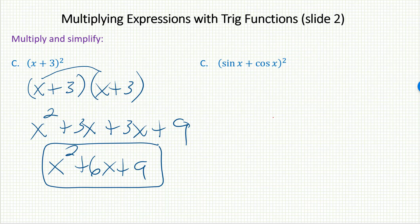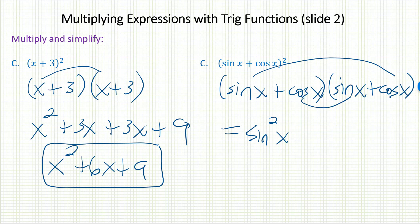Instead, you have to recognize this is a situation like we had before, where you're going to have to multiply that item by itself. That will result in a foil problem. First would be sine x times sine x, sine squared x. Notice the outer term, sine x, cosine x. The inner term is another sine x, cosine x.